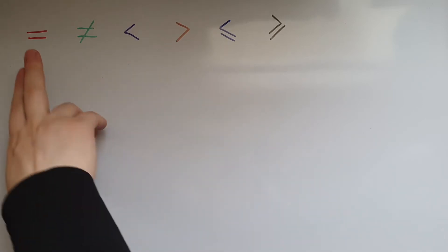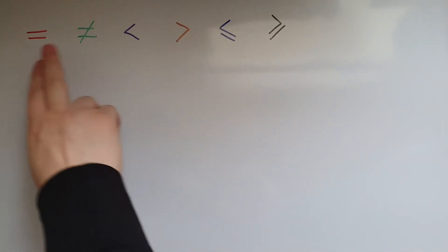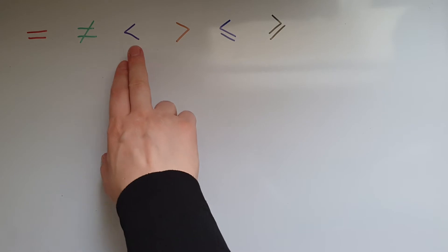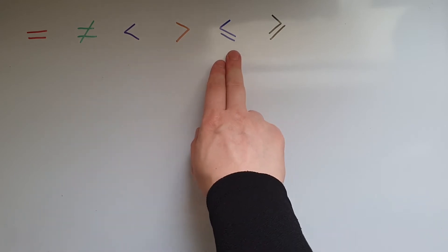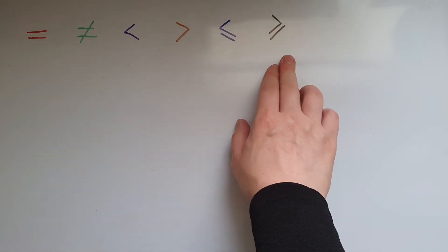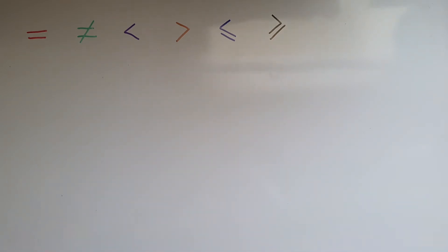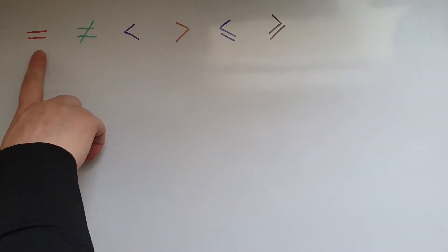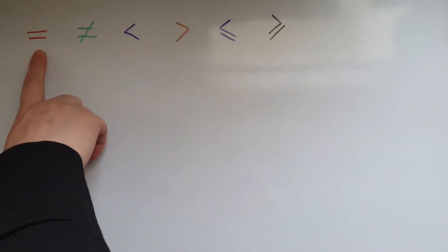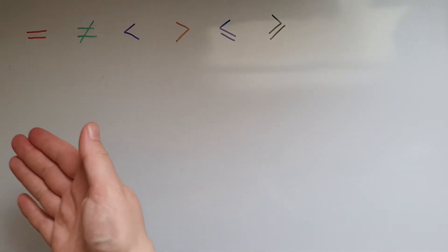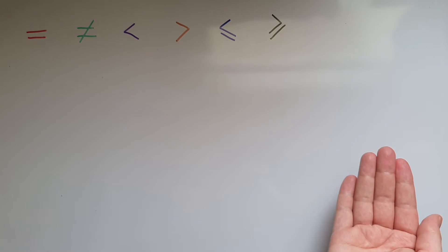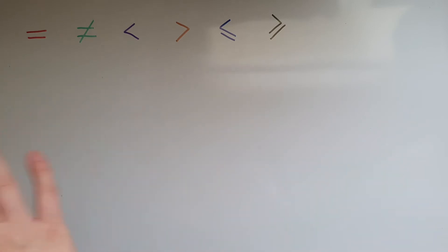In this video we'll learn about the equal to, not equal to, less than, greater than, less than or equal to, and greater than or equal to symbols. The equal to symbol is probably the one you're most familiar with — what you have on one side is equal to what you have on the other side, creating an equation.